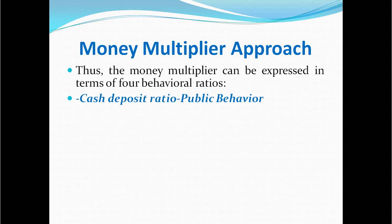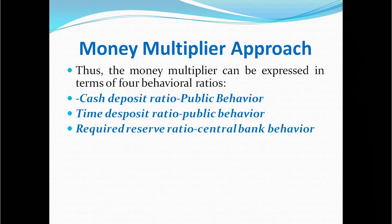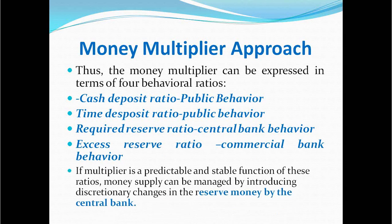These are called behavioral ratios because they reflect the behaviors of the public, commercial banks, and the central bank. For example, the cash deposit ratio and time deposit ratio show the behavior of the public towards holding cash; the required reserve ratio shows the behavior of the central bank; and the excess reserve ratio shows the behavior of commercial banks. The money multiplier theory says that if the multiplier is a predictable and stable function of these ratios, money supply can be managed by discretionary changes in reserve money by the central bank.